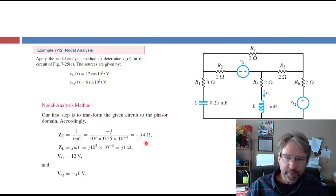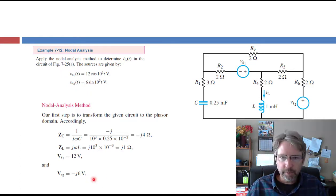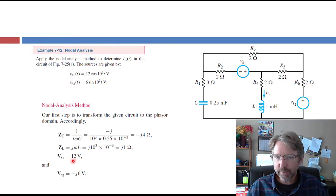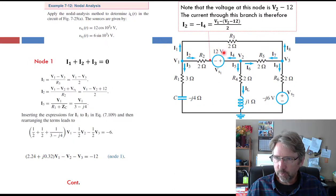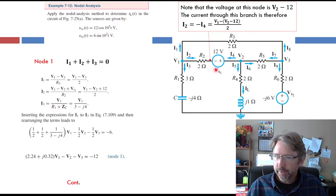The first step is to find all the impedances and convert everything to the phasor domain. VS1 is 12 cosine(10³t), so omega is 10³. VS2 is a sine function, which gives a phase of minus 90 when converted to cosine, yielding negative 6j for VS2. VS1 is 12 plus 0j — this is a phasor, not a DC value, even though it can look confusing. We then label all the voltages: V1 here, V2 here, V3 here, with the ground node at the bottom.